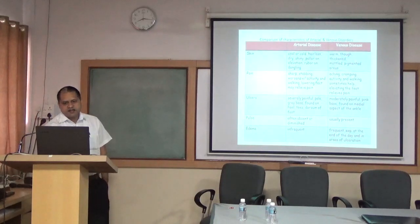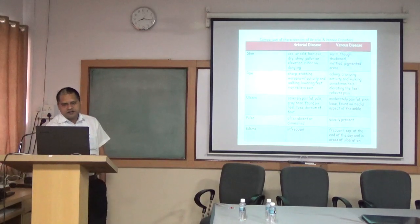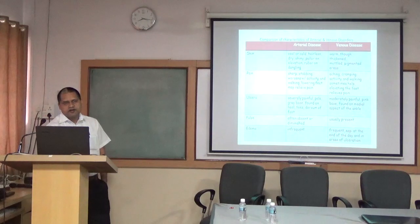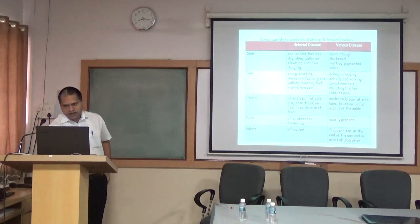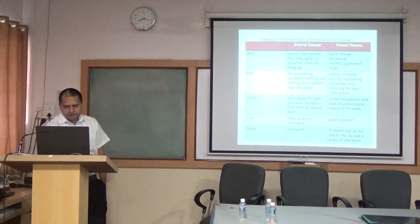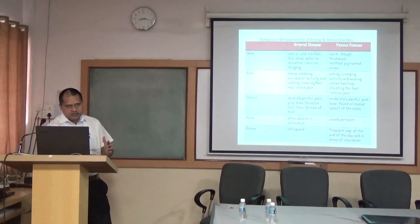This comparison chart covers arterial versus venous disorders. Regarding the skin: in arterial diseases it will be cold, hairless, and shiny with pallor on elevation and rubor on dangling; in venous diseases it will be warm with edema and pigmentation. Pain-wise, arterial disease causes sharp and stabbing pain, while venous disease causes aching and cramping pain. On activity, arterial pain increases.